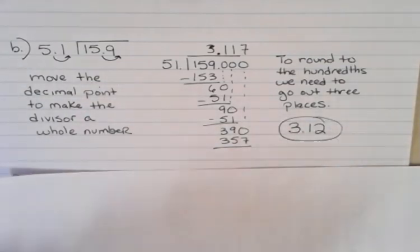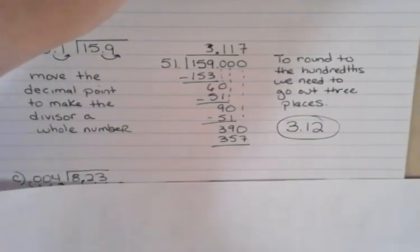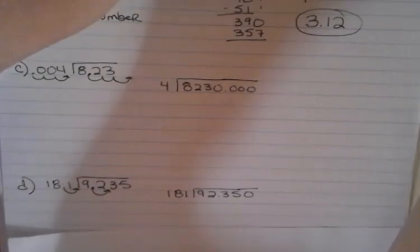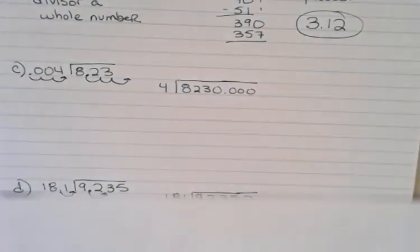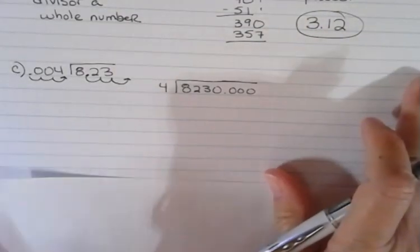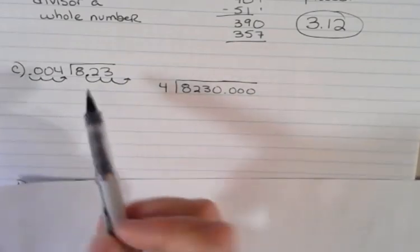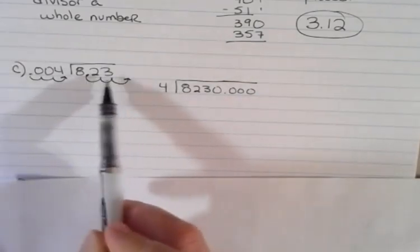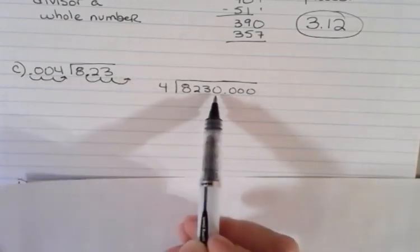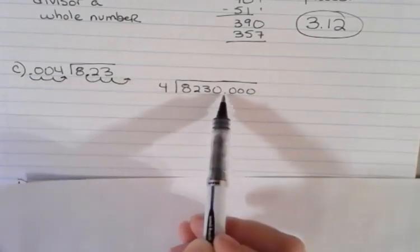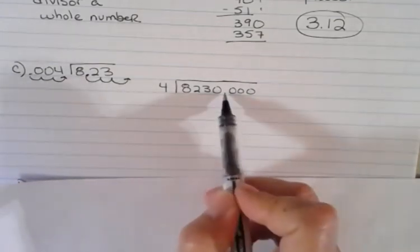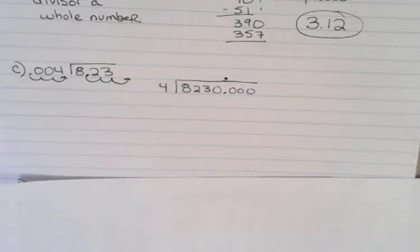In the next example, we have three decimal places in our divisor. So we're going to move that three places. We're going to move the decimal place three places for the dividend as well. But remember, if you have to move it three places and you only have two, then you've got to add a zero before you put that decimal point down. So I move that three, I move that three, and then that decimal point comes straight up into my answer.